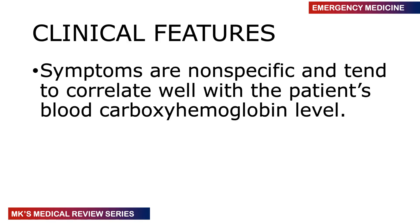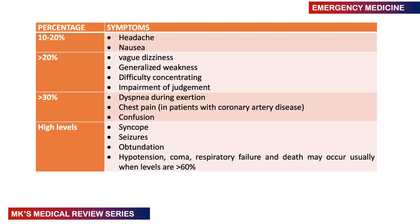Symptoms depend on the level of carboxyhemoglobin in the bloodstream. Levels of 10–20% may cause headache and nausea. Above 20%: vague dizziness, generalized weakness, difficulty concentrating, and impaired judgment. Above 30%: dyspnea on exertion, chest pains especially in patients with coronary artery disease, and confusion. At high levels: fainting, seizures, decreased level of consciousness, obtundation, hypotension, coma, respiratory failure, and death — especially at levels above 60%.